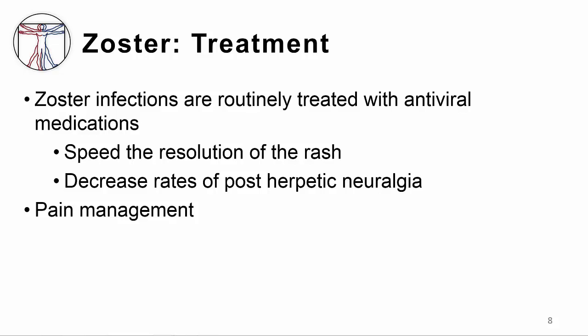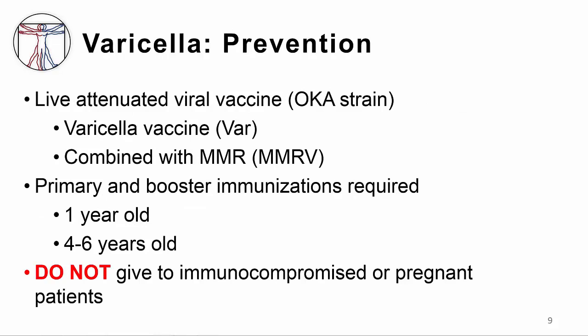We have a highly effective vaccine for both varicella and zoster. The varicella vaccine is a live attenuated viral vaccine derived from the Oka varicella strain. It was first developed in the 1970s in Japan and was successfully used there first. It was licensed in the U.S. in 1995, and since that time there has been a dramatic decrease in the number of cases of varicella. There are two forms of this vaccine: the varicella vaccine by itself, and a combination vaccine administered with measles, mumps, and rubella. People receive a primary and a booster shot, and this combination prevents somewhere between 88 and 98 percent of varicella cases. Since this is a live viral vaccine, you should not give this to immunocompromised or pregnant patients.